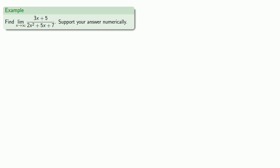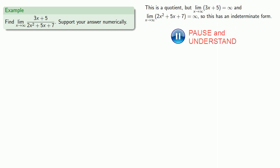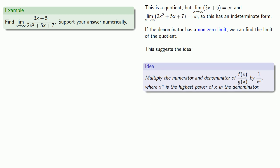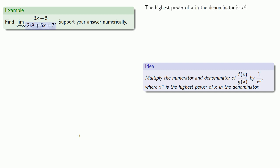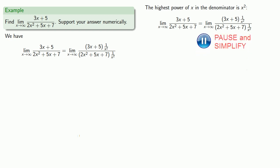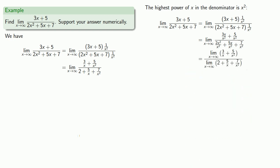So let's find the limit of a rational function. Since it's a quotient, we can find the limits individually. However, both numerator and denominator have a limit of infinity, so this is an indeterminate form. If we could change this so our denominator has a non-zero limit, we can find the limit of the quotient. For a rational function, we multiply numerator and denominator by 1 over x to the n, where x to the n is the highest power of x in the denominator. In this function the highest power is x squared, so we multiply by 1 over x squared, do some algebraic simplification, evaluate the limit as the quotient of the limits, and get a limit value of 0.